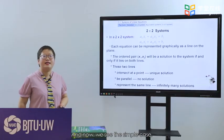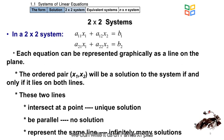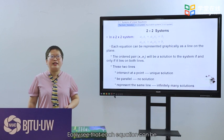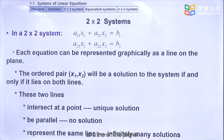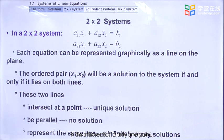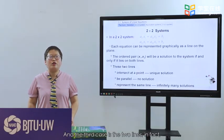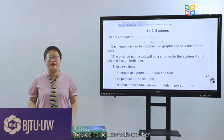Now we look at the simple 2×2 case. We can write a11·x1 + a12·x2 = b1 and a21·x1 + a22·x2 = b2. Each equation can be represented graphically as a line on the plane. An ordered pair (x1, x2) is a solution if and only if it lies on both lines. If the lines intersect at one point, there is a unique solution. If the lines are parallel, there is no solution. If the two lines coincide, there are infinitely many solutions.